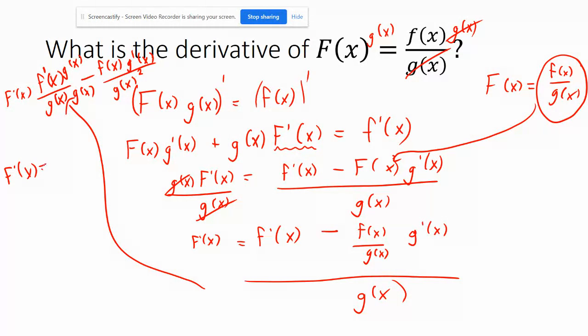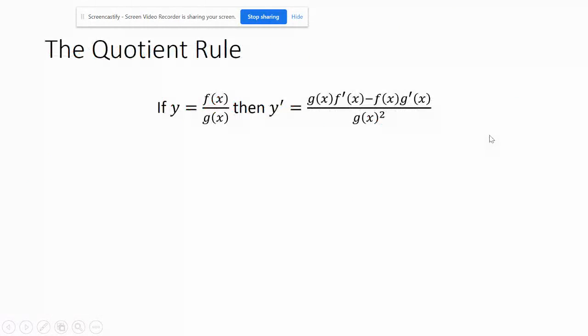So we have F prime of x equals f prime of x, g of x, minus f of x, g prime of x. Sorry, guys. It's getting all over the place. All over g of x squared. Okay. So, sorry, guys. I'm just going to finish this on the next screen over here.